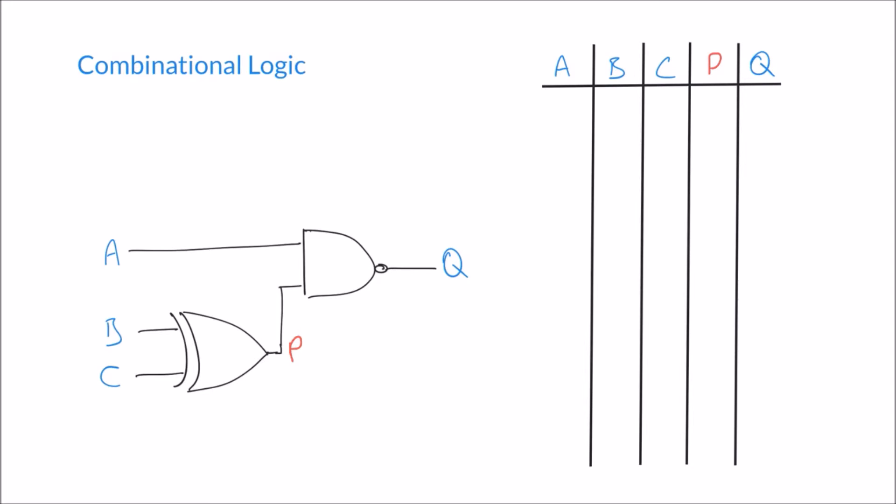And again, I can also construct my possible combinations by using the half and half rule that I did previously. So 4 zeros and 4 ones, because again I know that there's 8 possible combinations as a result of 3 inputs. Half of those zeros in column B, and finally we're down to single zeros and ones for column C. So again, I've covered every possible combination there.